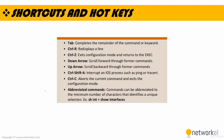Here are the shortcuts and hotkeys you can use in Cisco IOS. Tab is a really awesome feature — you can complete the remainder of a command using Tab. What we really use most are the down and up arrows. When you hit the down arrow, you scroll forward through former commands. When you hit the up arrow, you scroll backward through former commands. For example, if I typed an IP address command and then a router OSPF command, I can navigate between these using the up and down arrows. You can use Ctrl-C to abort the current command and exit configuration mode. And you can use Ctrl-Shift-6 to interrupt an IOS process such as ping or traceroute — for example, if you ping somewhere and want to stop it immediately, use Ctrl-Shift-6.